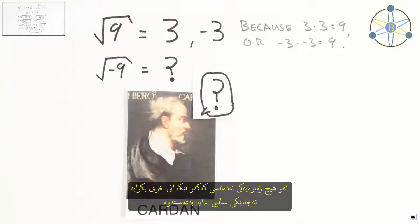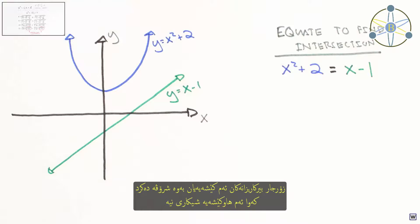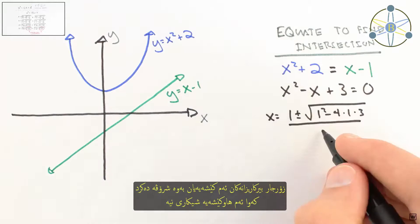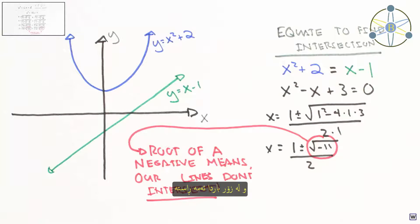Cardan was stuck too. He didn't know of any numbers that, when multiplied by themselves, resulted in a negative. Now this certainly wasn't the first time the square root of a negative had shown up. Usually mathematicians would interpret this as the problem's way of saying there are no solutions, and in many cases this is true.